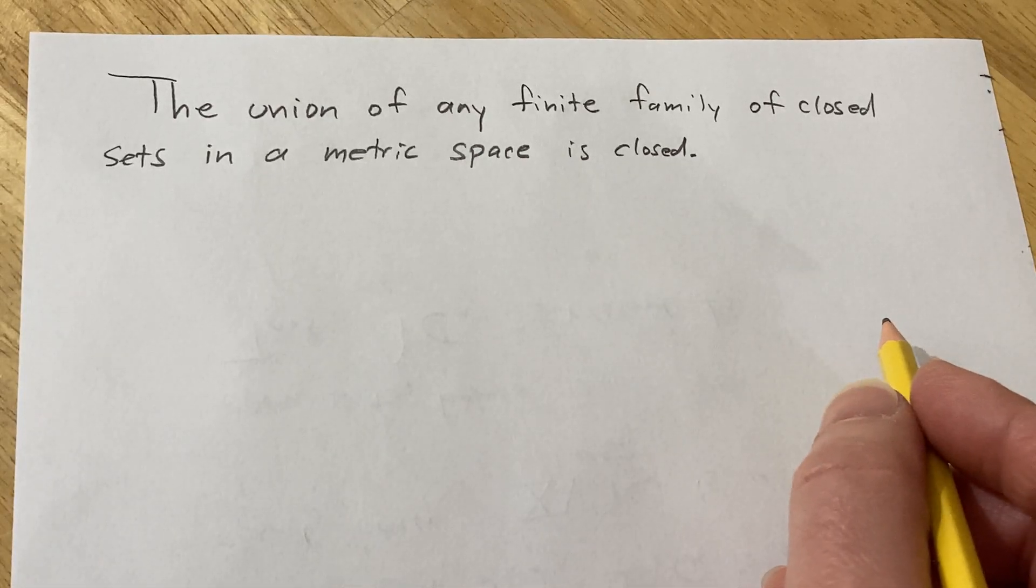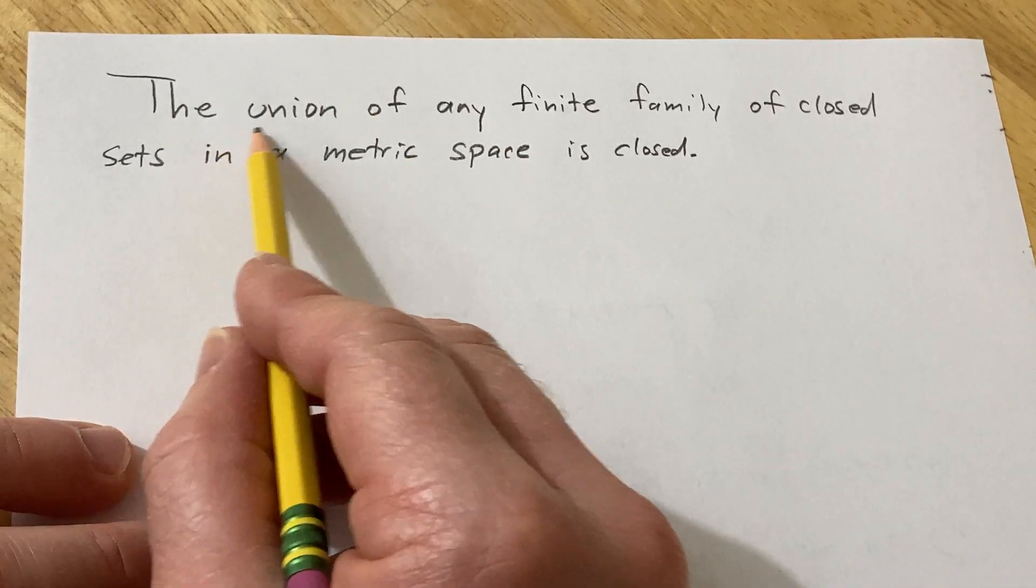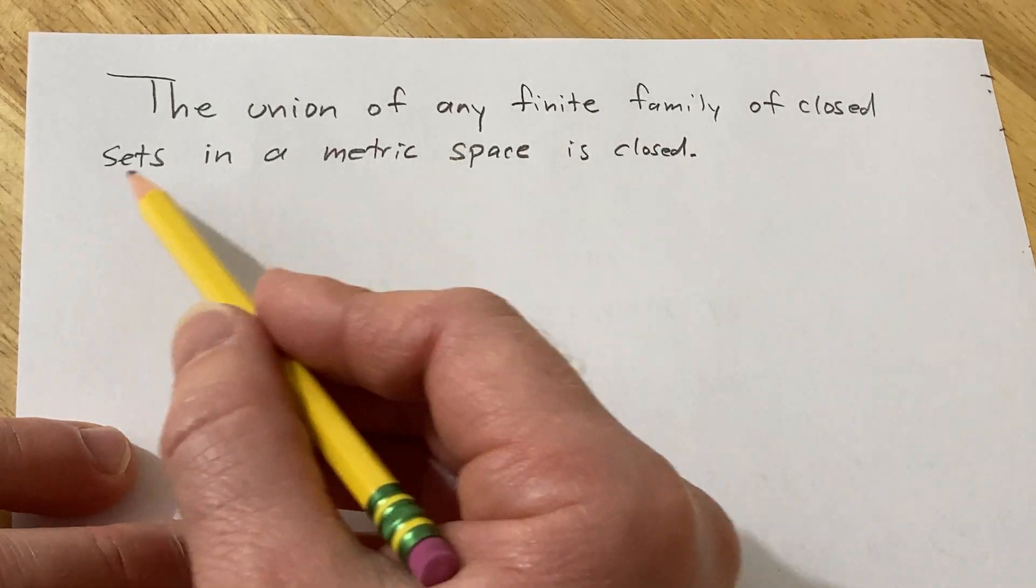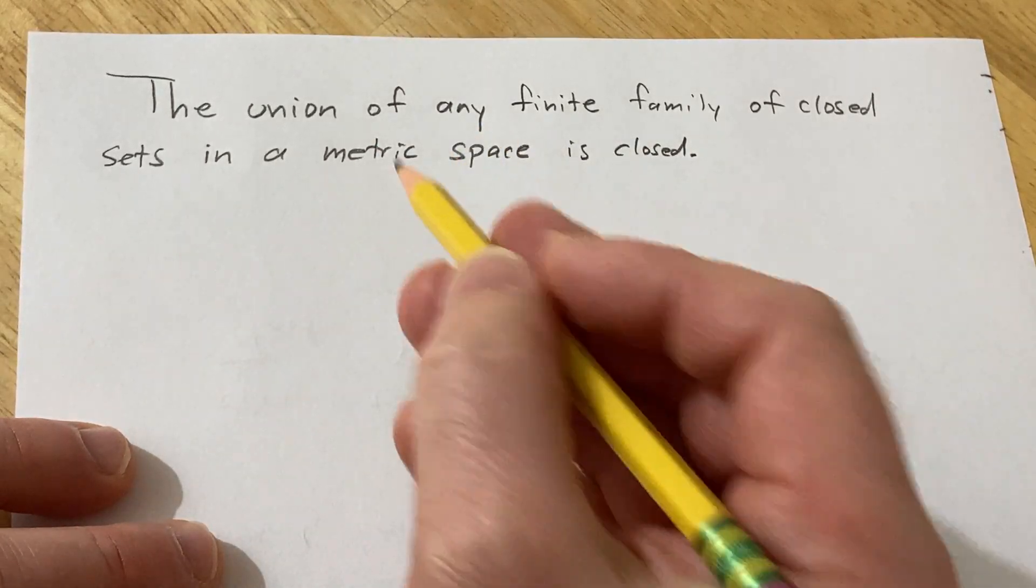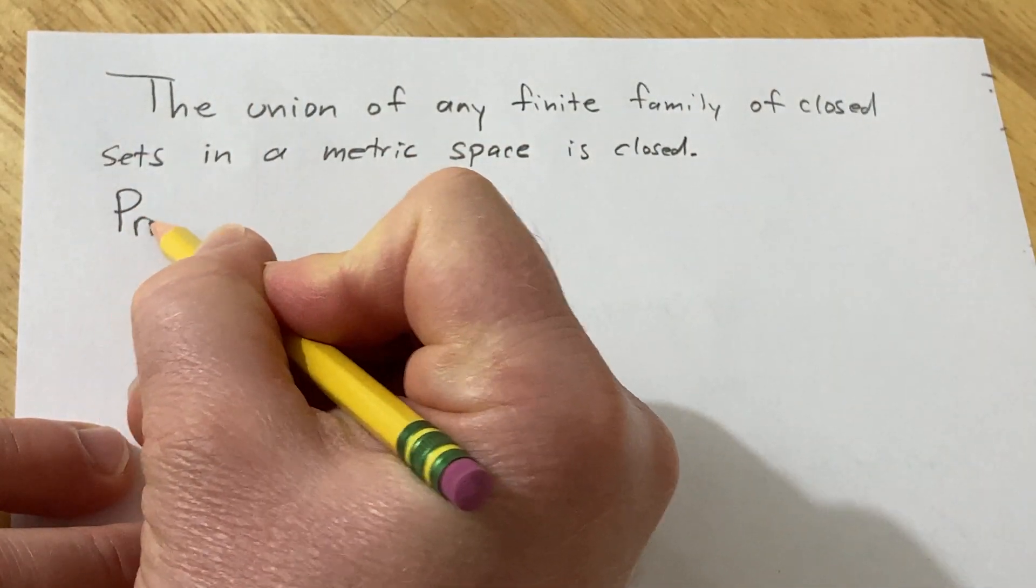Hi, in this problem we are going to do a proof. We're going to prove that the union of any finite family of closed sets in a metric space is closed. Let's go ahead and go through the proof.